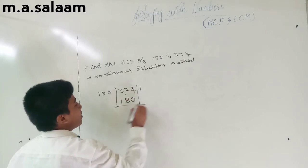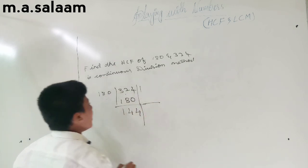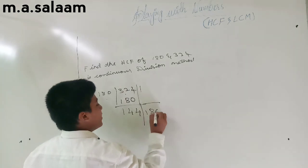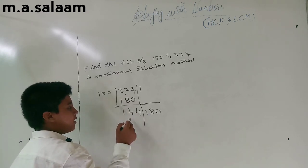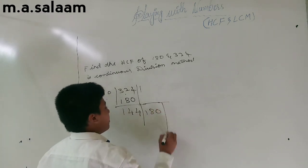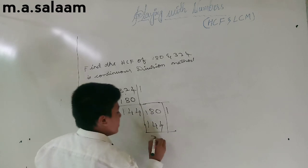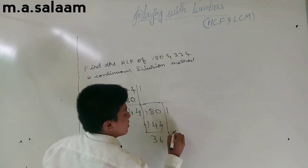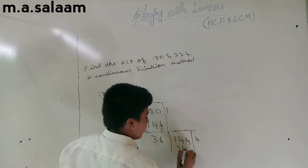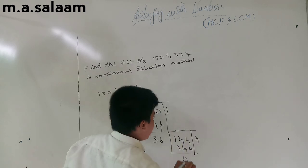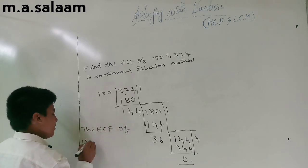180 goes into 324 once, so the remainder is 144. Draw a line and write 180 again. Now 144 is smaller than 180, so we use 144 as the divisor and 180 as the dividend. 144 goes into 180 once, and the remainder is 36.